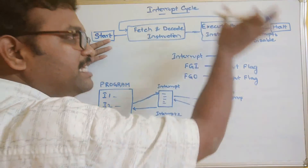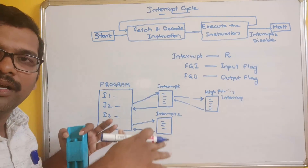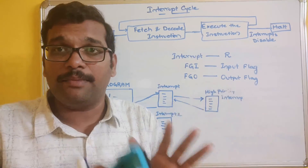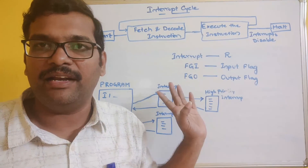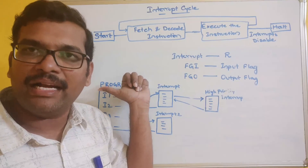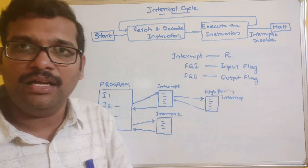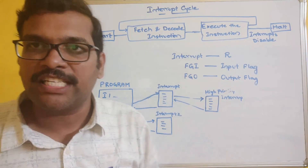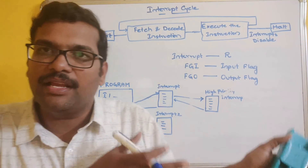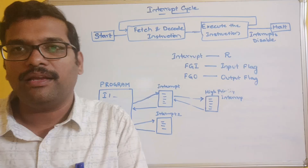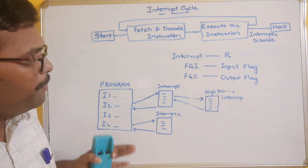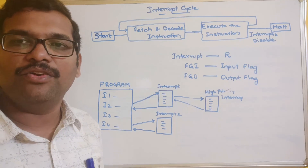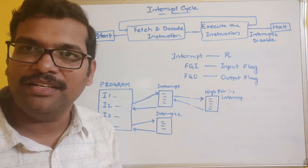To summarize: this is the instruction cycle with interrupts disabled, and we also drew the instruction cycle with interrupts enabled. Whenever interrupts occur, the interrupt handler handles them, and then the current instruction execution resumes before fetching the next instruction. We have seen the instruction cycle without interrupts and the instruction cycle with interrupts.